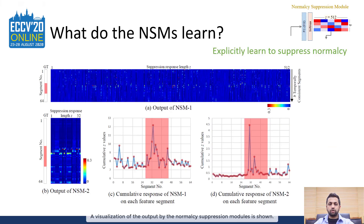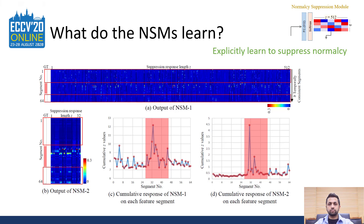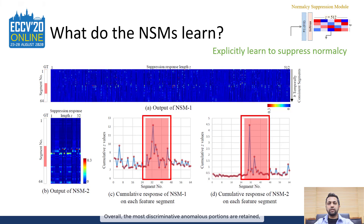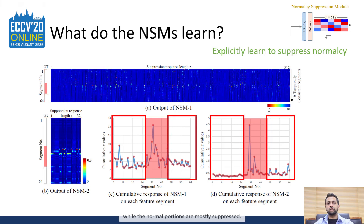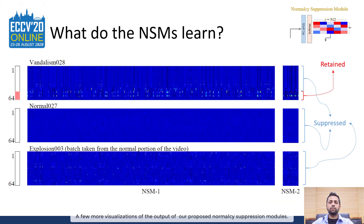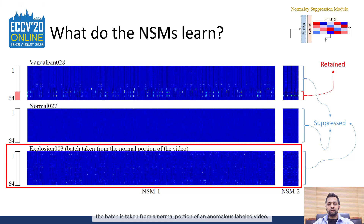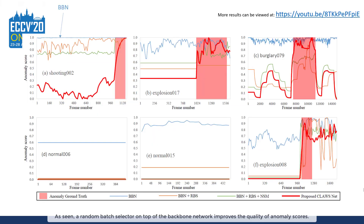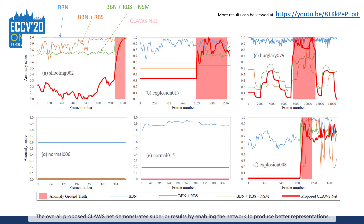A visualization of the output by the normalcy suppression modules is shown. Once the training is done, NSMs learn to suppress the normal portions of an input batch. Figures C and D visualize a cumulative response of NSMs on each feature segment in a batch. Overall, the most discriminative anomalous portions are retained, while the normal portions are mostly suppressed. In the third row, the overall suppression is quite accurate given that the batch is taken from a normal portion of an anomalous labeled video. A random batch selector on top of the backbone network improves the quality of anomaly scores, and normalcy suppression modules further enhance the discrimination by suppressing normal portions of the videos. The overall proposed ClauseNet demonstrates superior results by enabling the network to produce better representations.